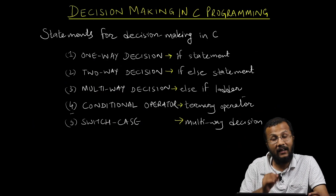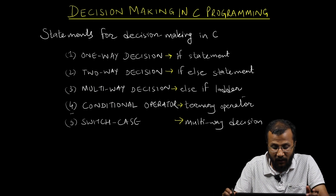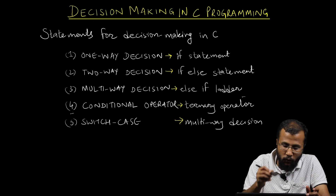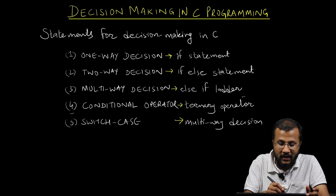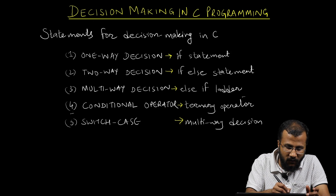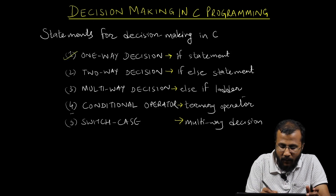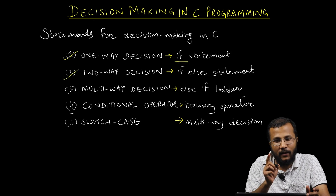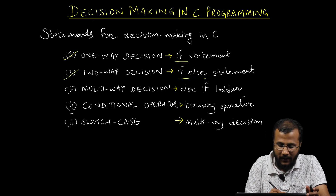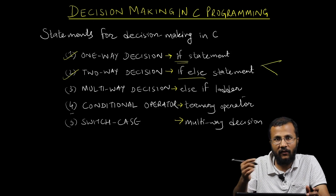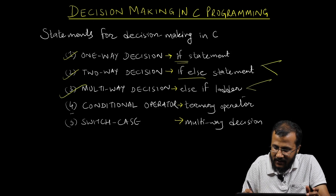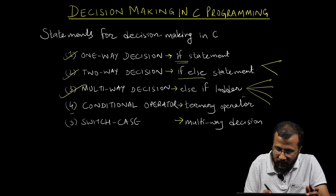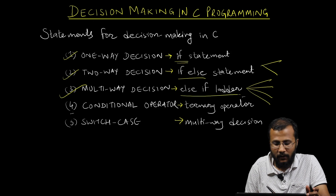In C programming, there are five kinds of decision-making statements, and we'll have a dedicated lecture for each in subsequent sessions. The first is one-way decision-making using a simple if statement. The second is two-way decision-making using an if-else statement. The third is multi-way decision-making using an else-if ladder.